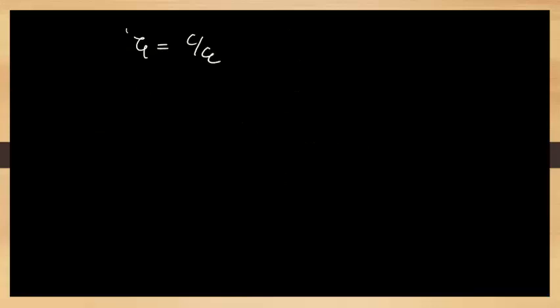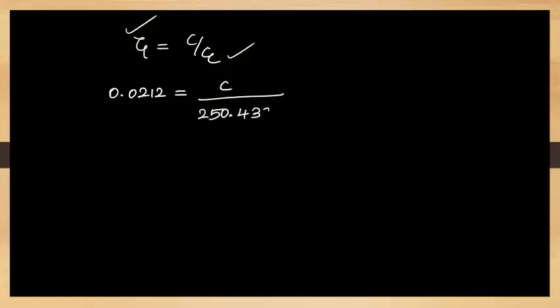We have now calculated the damping ratio zeta and the critical damping coefficient cc. Substituting those two values into the relationship zeta = C/cc: 0.0212 = C / 250.4396. So the damping coefficient of the given vibratory system is C = 5.3093 N·m⁻¹·s.